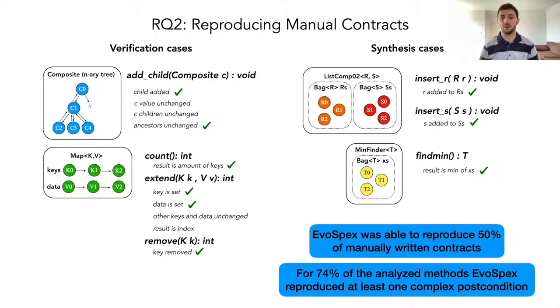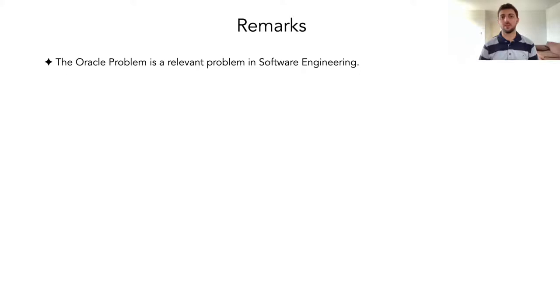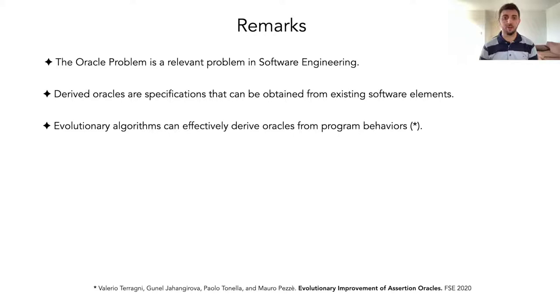To finish, let me highlight some remarks. The Oracle problem is a relevant problem in software engineering. Derived oracles are specifications that can be obtained from existing software elements. Evolutionary algorithms can effectively derive oracles from program behaviors as evidenced by EvoSpex and other recent work. And EvoSpex can capture sophisticated and interpretable properties for class implementations. Thank you very much for listening.